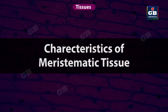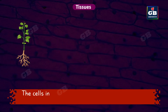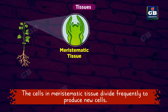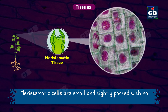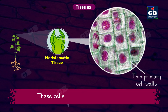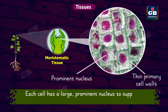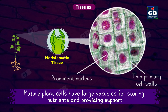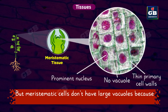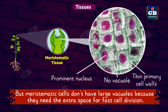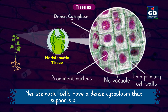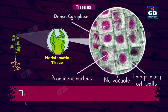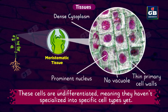Now let us see the characteristics of meristematic tissue. The cells in meristematic tissue divide frequently to produce new cells. Meristematic cells are small and tightly packed with no intercellular spaces. These cells have thin primary cell walls. Meristematic cells have a large prominent nucleus to support frequent cell division. Mature plant cells generally have large vacuoles, but meristematic cells do not have large vacuoles because they need the extra space for fast cell division. Meristematic cells have a dense cytoplasm that supports active cell division. These cells are undifferentiated, meaning they haven't specialized into specific cell types yet.